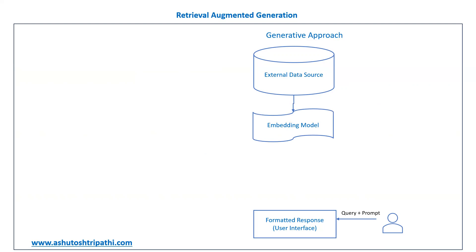The embeddings can be vector-based or other types depending on the model being trained. Most LLMs — whether from Meta, Google, OpenAI, or others — follow a transformer-based architecture. That is the engine behind those LLMs. Once the model is trained, the query including the prompt will interact with that LLM engine and get a response. That is the generative approach in a nutshell.